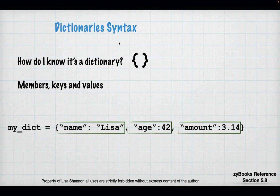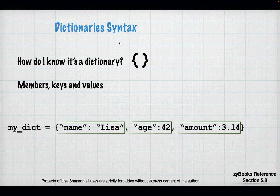If I look at 'my_dict = {"name": "Lisa", "age": 42, "amount": 3.14}', I know 'my_dict' is a variable on the left-hand side of a single equal sign. On the right-hand side I'm assigning a dictionary with three elements. The first key value pair is name: Lisa — I've just associated the word 'name' with the value 'Lisa'. Age is 42, and amount is 3.14.